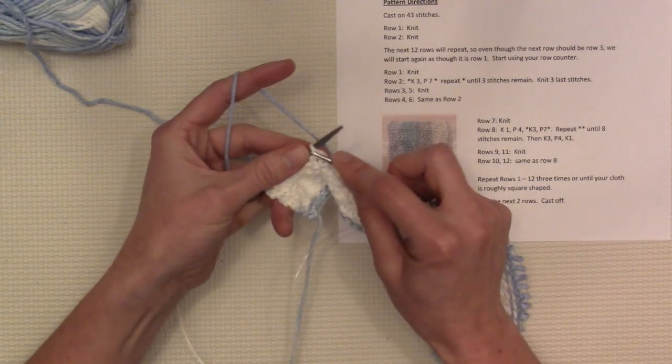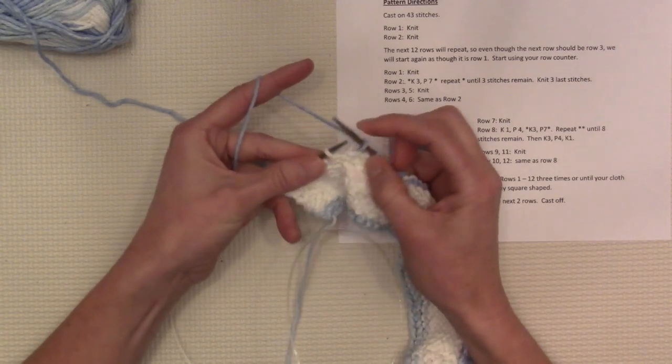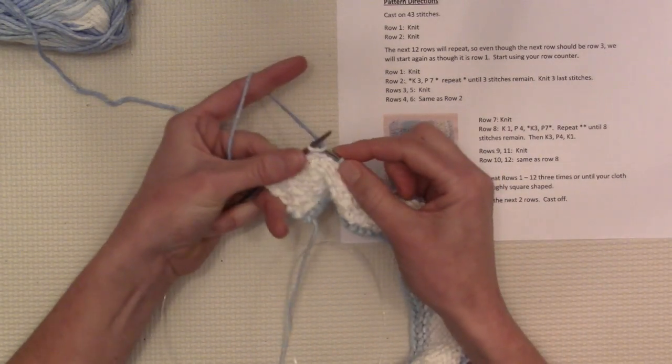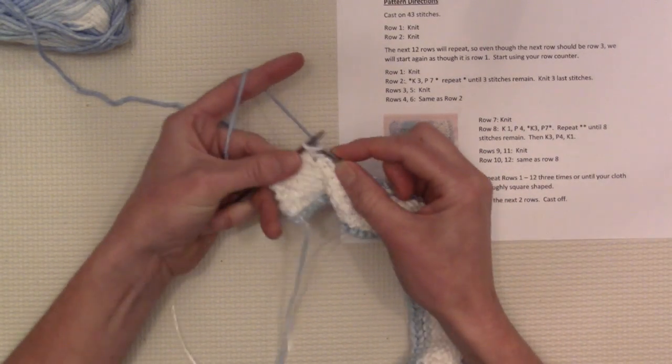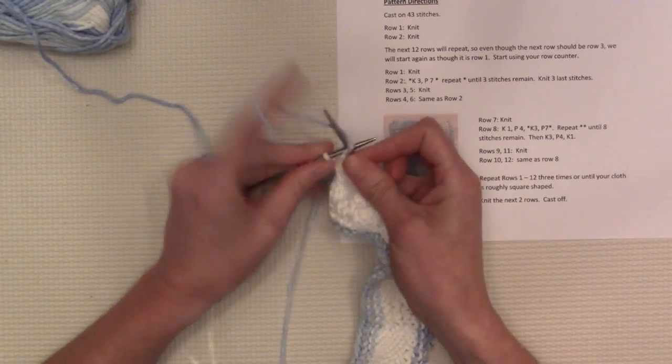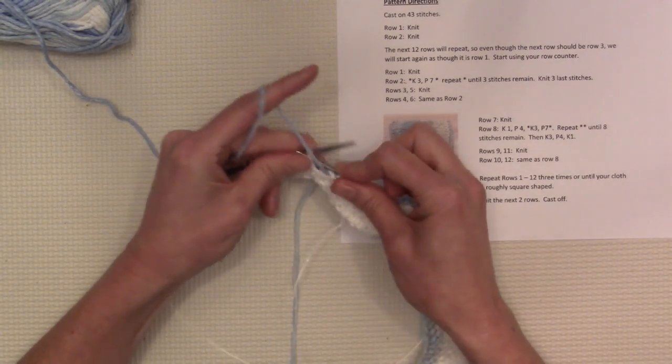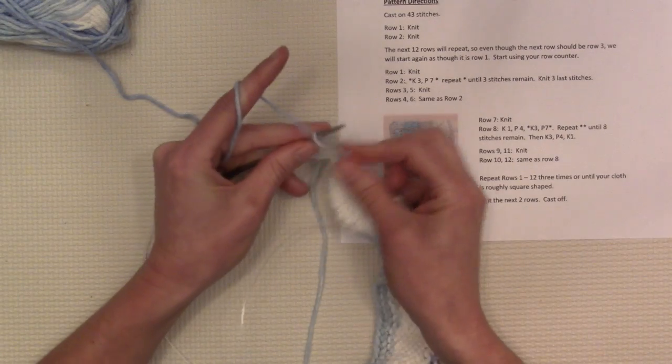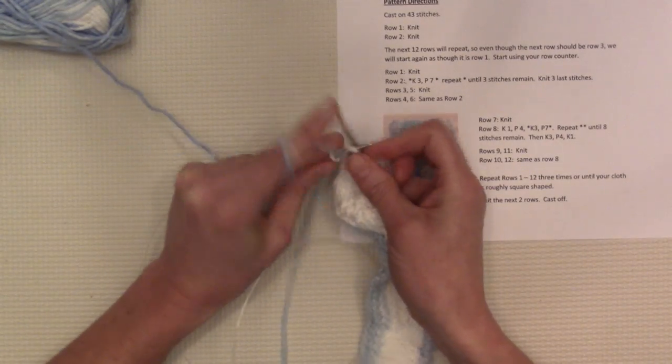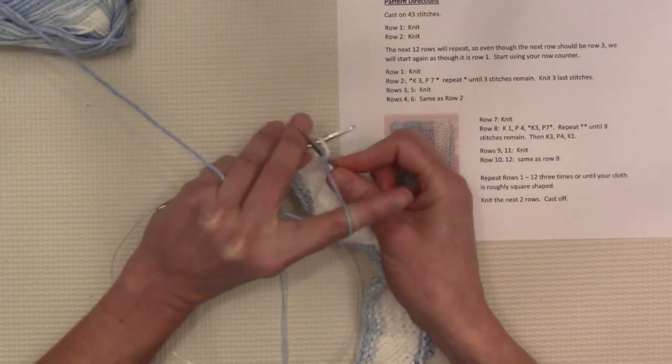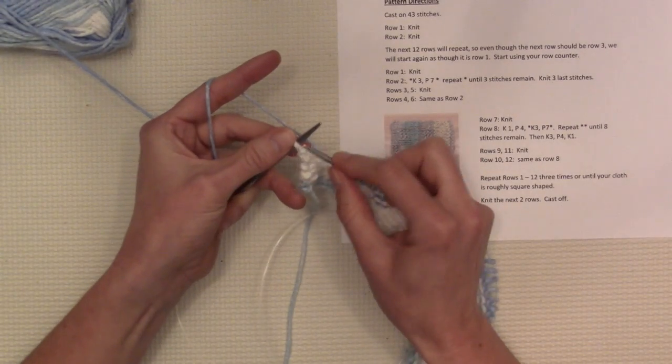So you knit 3: 1, 2, 3. And then you purl 4: 1, 2, 3, 4. And then you knit 1.